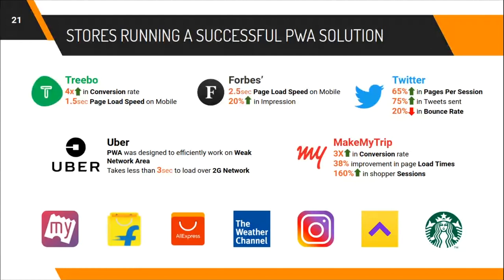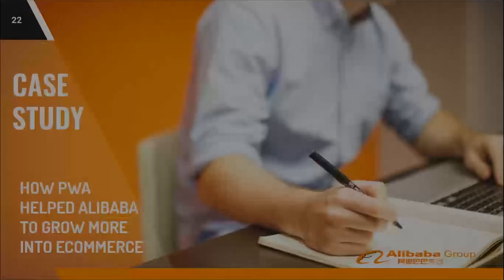Forbes, the popular American business magazine, implemented PWA for their website. Their mobile page load speed came out at 2.5 seconds, representing a 20 percent increase in customer impressions. Twitter, the micro-blogging social networking site, saw the average number of pages viewed during a session increase by 65 percent after implementing PWA. The number of tweets sent also increased by 75 percent. Other organizations like Uber, MakeMyTrip, Flipkart, Starbucks, and AliExpress also adopted PWA with remarkable results.